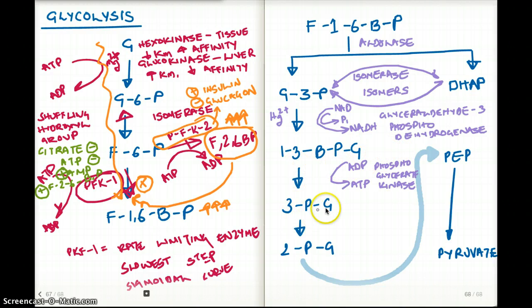But moving on, from 3-phosphoglycerate to 2-phosphoglycerate, that step is achieved by mutase. And from 2-phosphoglycerate to PEP, or phosphoenolpyruvate, is achieved by enolase. Enolase is also inhibited by fluoride, which is found in a lot of toothpaste. A lot of elderly people get fluoride poisoning, so they have issues with the enzyme enolase.